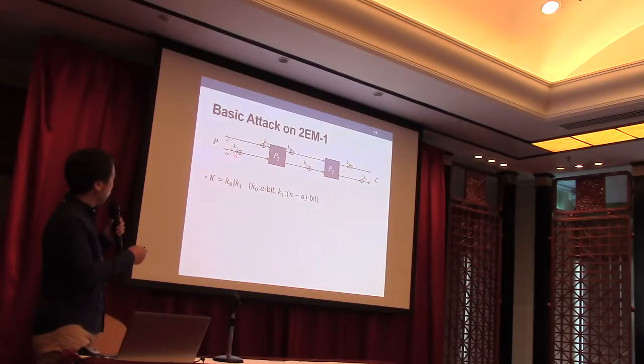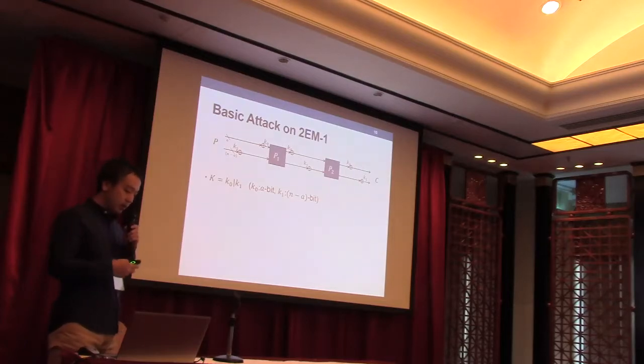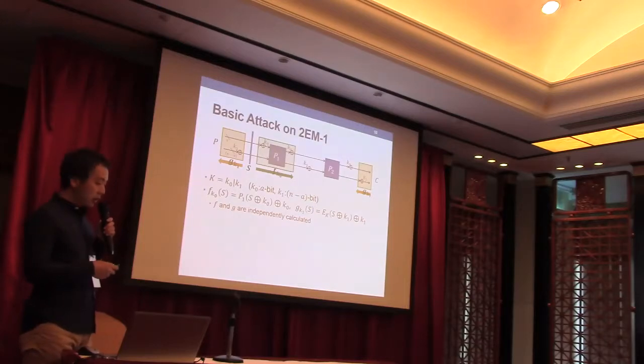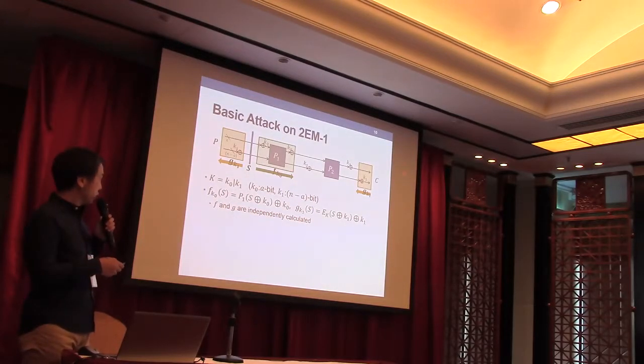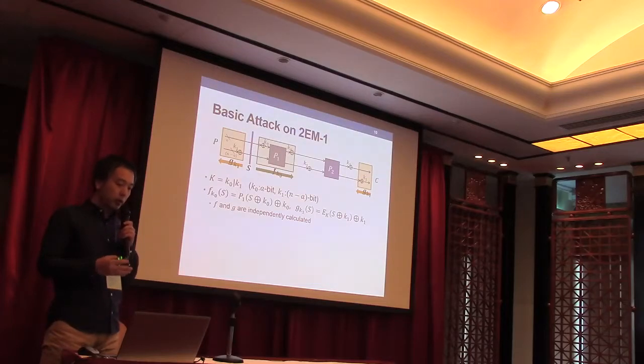First we divide n-bit key into two keys, K0 and K1. K0 is a bits and K1 is n minus a bits. Then we define two key-dependent functions F and G.